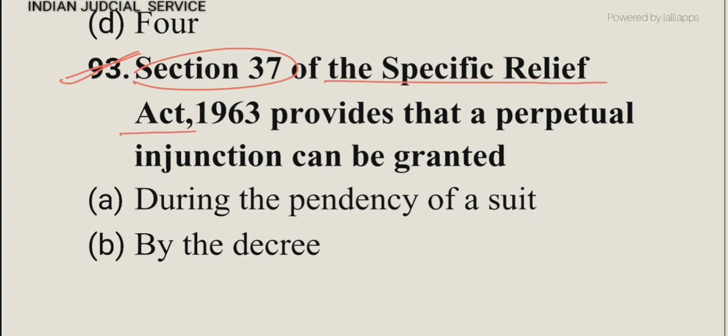Question number 93: Section 37 of the Specific Relief Act 1963 provides that a perpetual injunction can be granted. Perpetual injunction and temporary injunction are both provided under section 37.